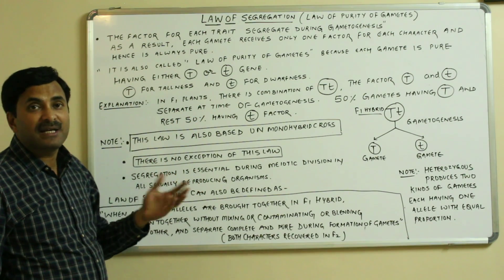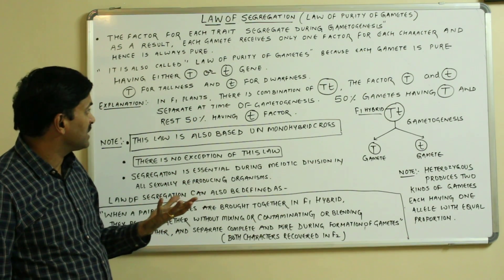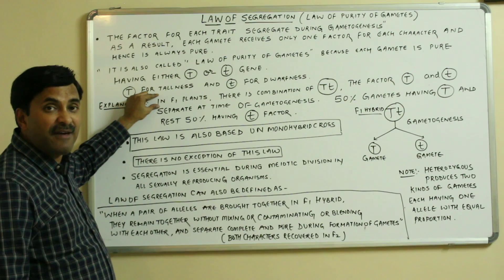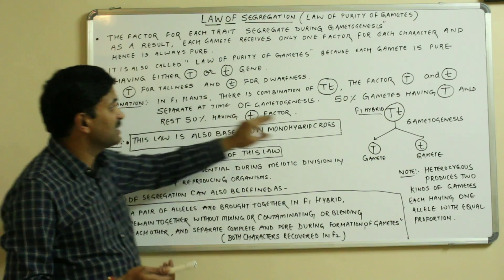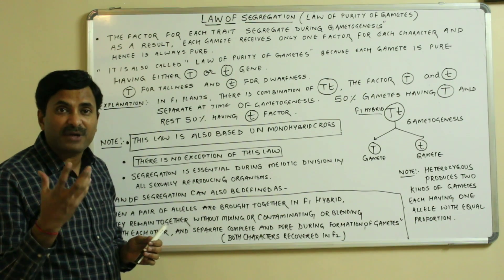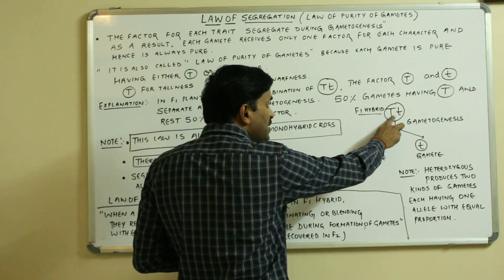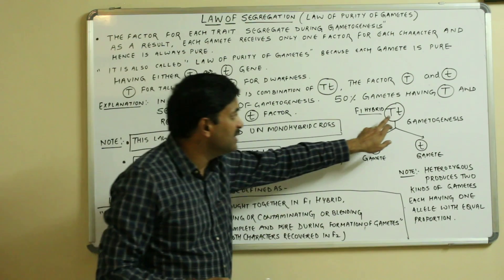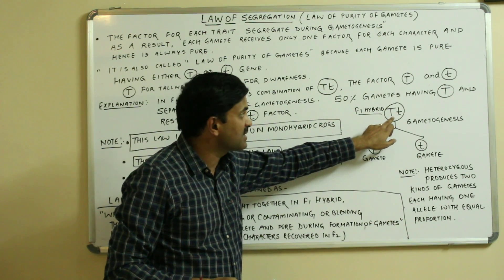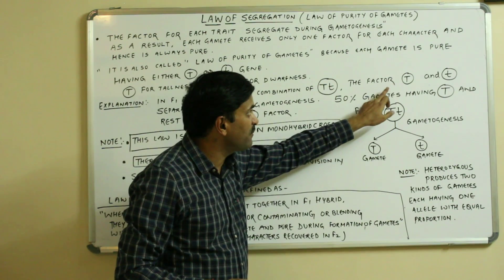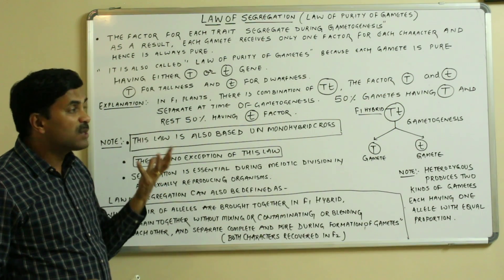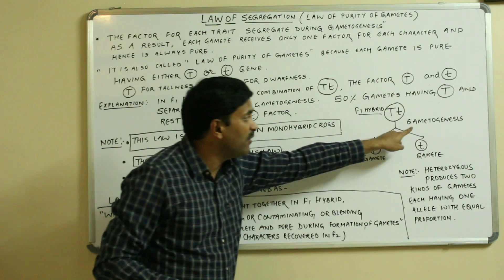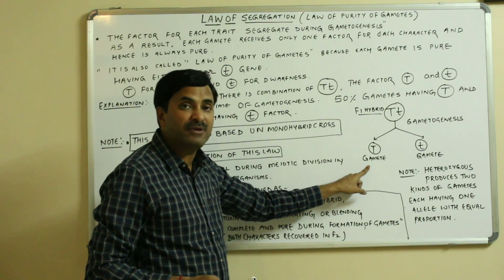The gamete bearing small t will be pure for dwarfness. So a gamete will bear either capital T or small t. The explanation of this law of segregation is that in F1 plants or F1 offspring — you can see this is the F1 hybrid — there is a combination of capital T and small t. This law states that capital T and small t will separate at the time of gametogenesis.